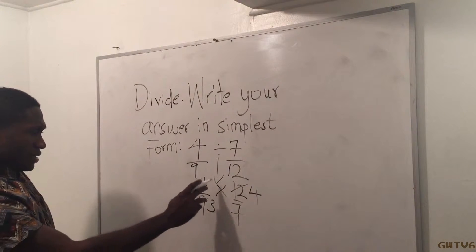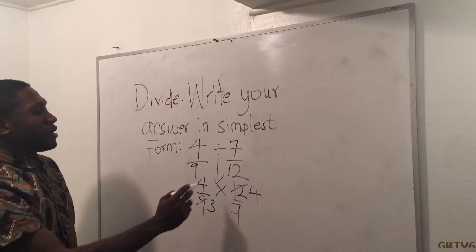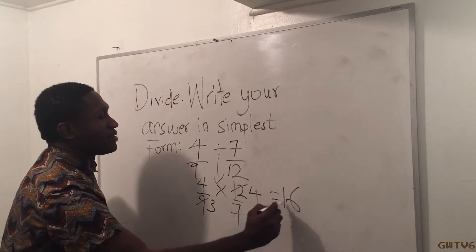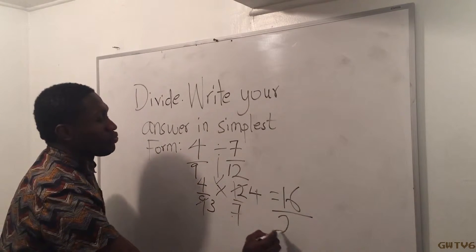And there's nothing else I can do, so now I just multiply. 4 times 4 is 16, and then 3 times 7 is 21.